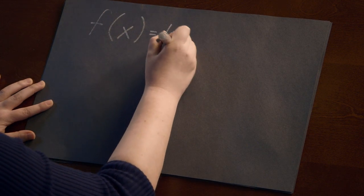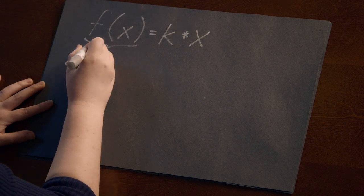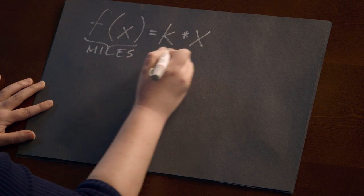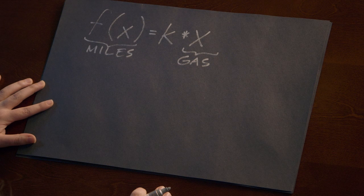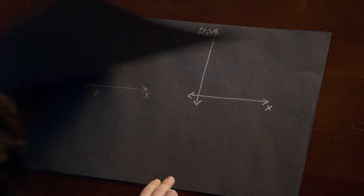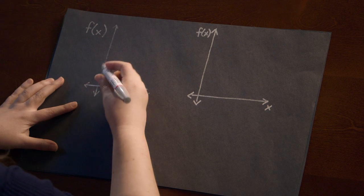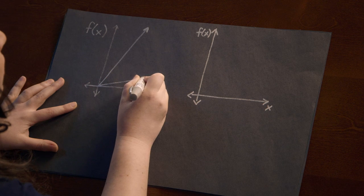Let's start by thinking about a relationship that you probably already have confidence in: the number of miles you can drive in a vehicle depends on the number of gallons of gas you use. This gives a simple linear model. The parameter K is one we're probably already familiar with — miles per gallon. A high K gives a very steep line, whereas a lower K gives a shallow line.